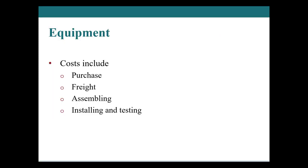Equipment costs include the purchase price, any freight charges, and insurance during transit paid by the purchaser. For example, some friends started a pizza business and flew an oven in from Italy; they also paid an Italian man to assemble, test, and install it. All of those costs, as well as the insurance for the oven's transit, were capitalized to the cost of that equipment.